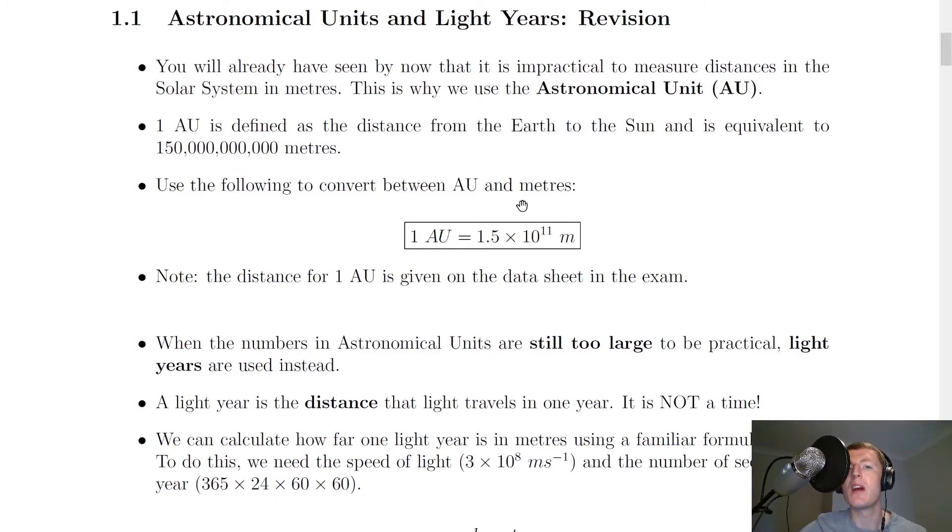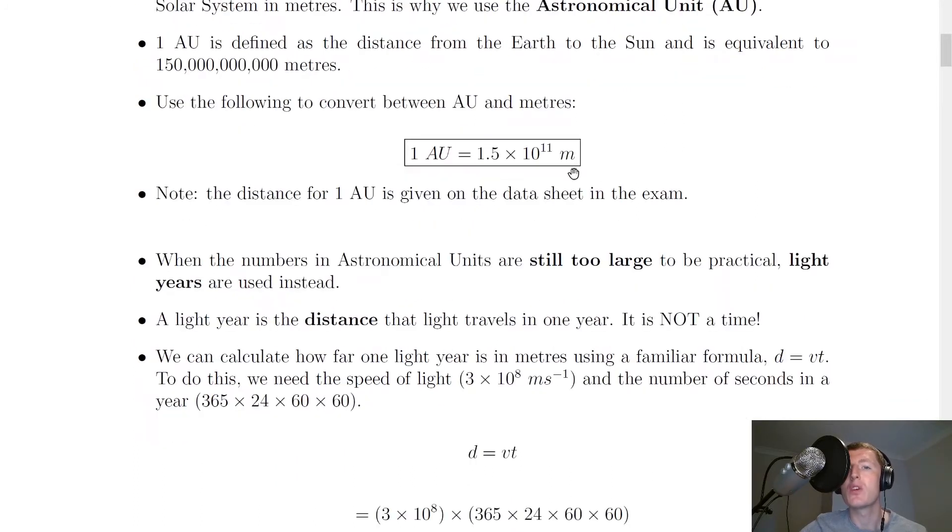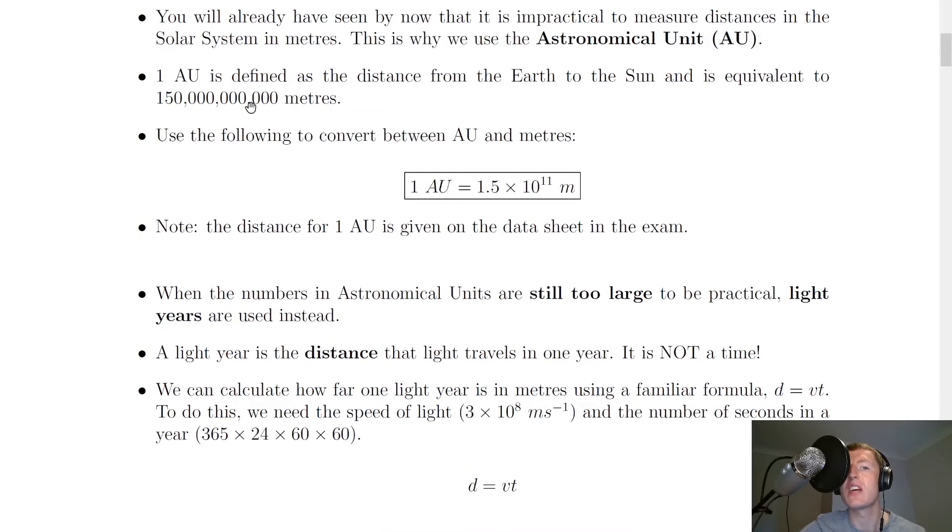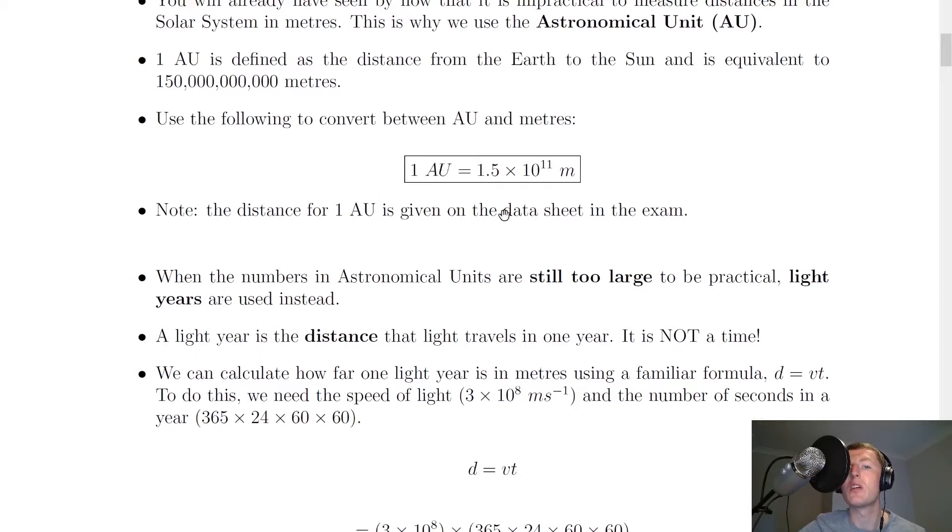Use the following to convert between AU and meters: 1 AU equals 1.5 times 10 to the 11 meters. That is just this number in scientific notation. You should also note that the distance for 1 AU is given on the data sheet in the exam, so you don't have to remember it. But you do need to know how to apply it to questions.